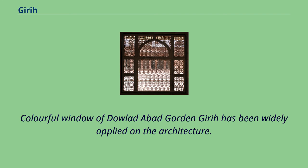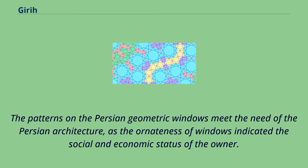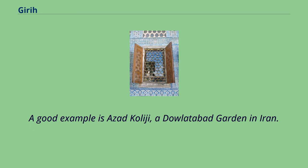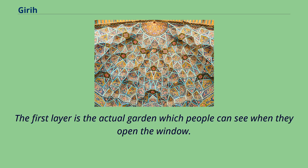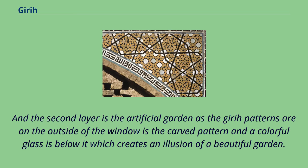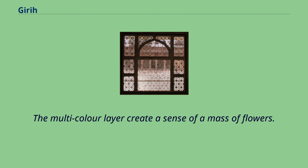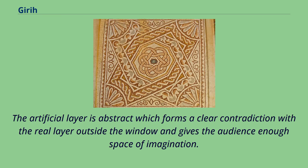Girih has been widely applied in architecture. The patterns on Persian geometric windows meet the needs of Persian architecture, as the ornateness of windows indicated the social and economic status of the owner. A good example is the Dolat Abad garden in Iran: with girih patterns on its window, the architects manage to demonstrate multiple layers — the actual garden visible when the window is opened, and an artificial garden created by carved patterns and colorful glass below, which creates an illusion of a beautiful garden, giving the audience space for imagination.